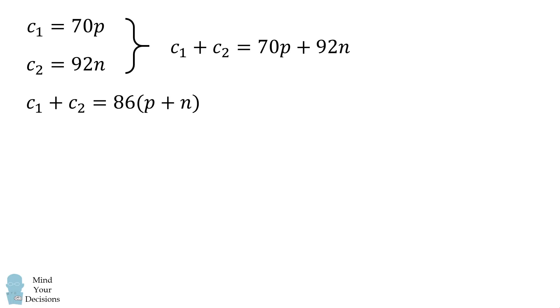Now we have something we can work with. We have one expression for C1 plus C2, and we have another expression for C1 plus C2. So let's equate these two expressions. We have 70P plus 92n is equal to 86 times the quantity P plus n, which will then distribute to be 86P plus 86n.